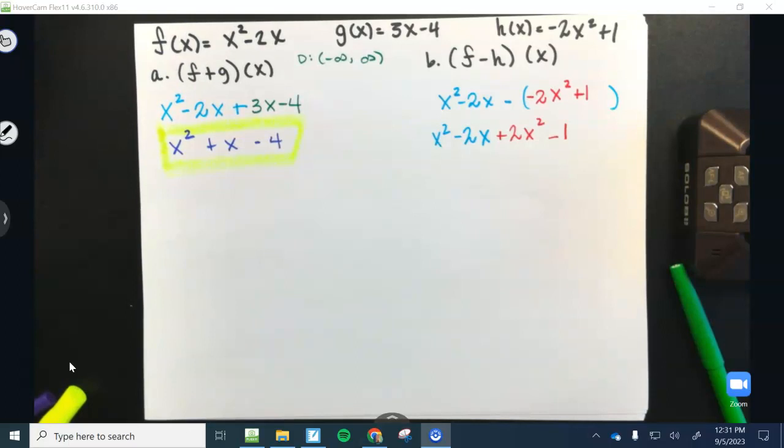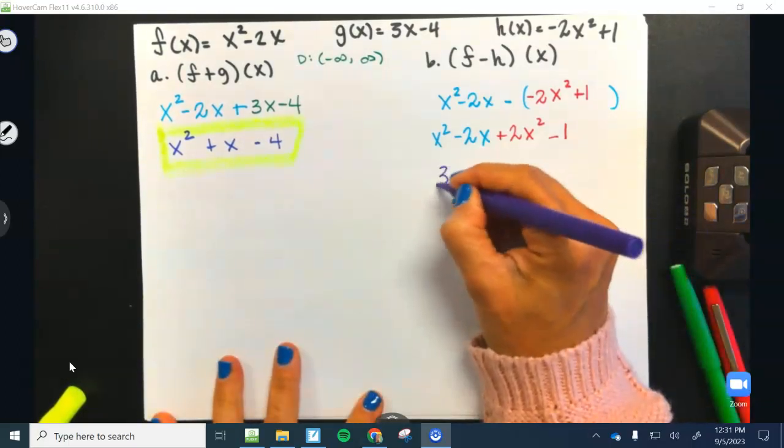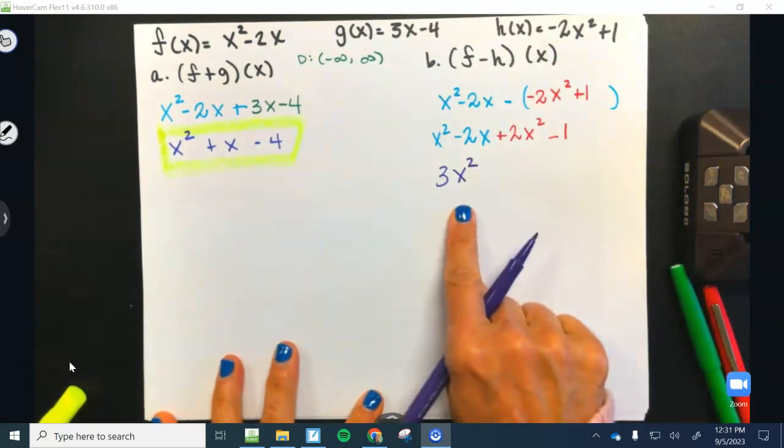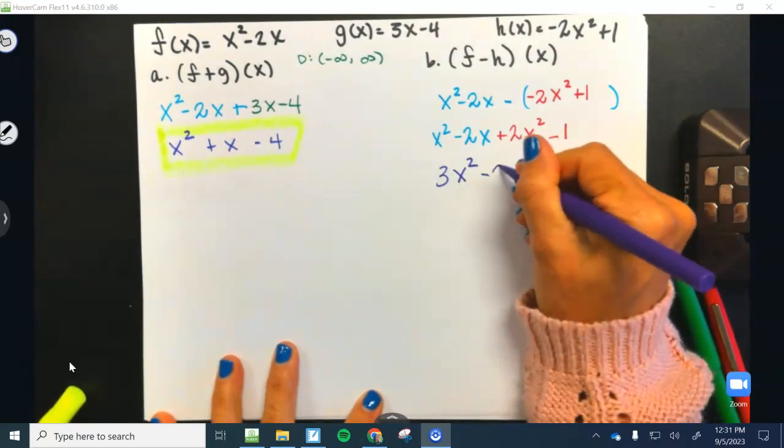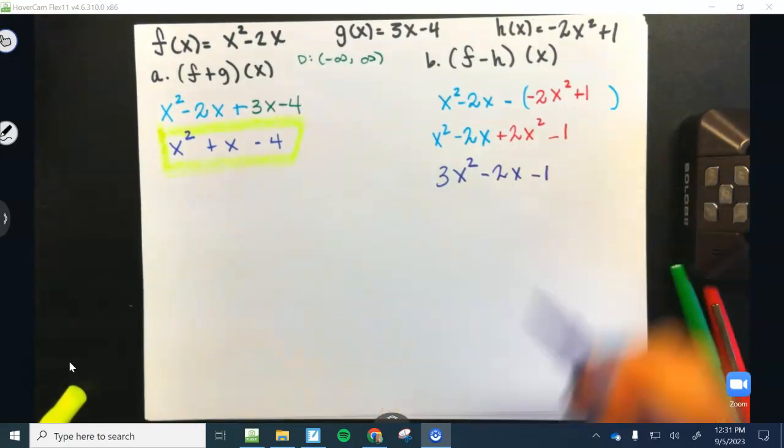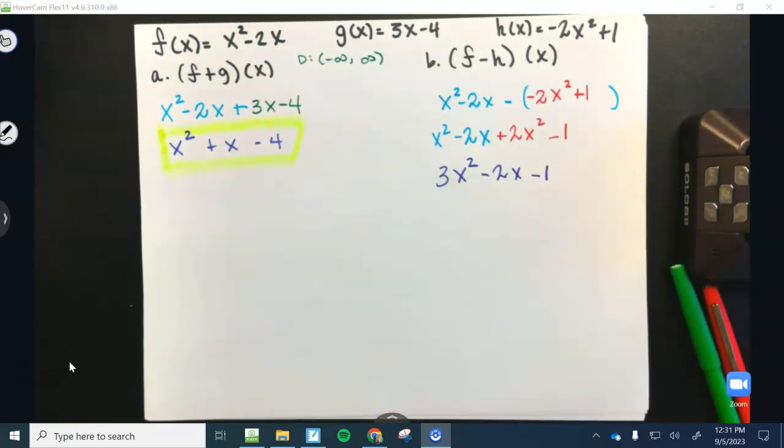And then, again, just combine like terms. So we're going to have a coefficient of 3 for that quadratic term and then minus 2x and then minus 1. And that's it.